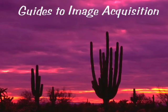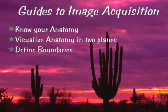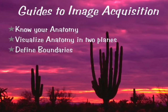Your guides to getting a good ultrasound image: know your anatomy; visualize the anatomy in at least two planes; define the boundaries; choose the proper transducer; learn the correct acoustic windows; and maximize the system controls for the best image. You can review these videos as required before the course. Thanks for your attention.